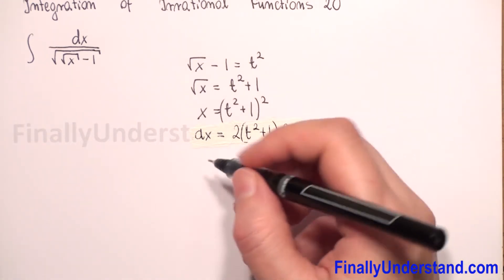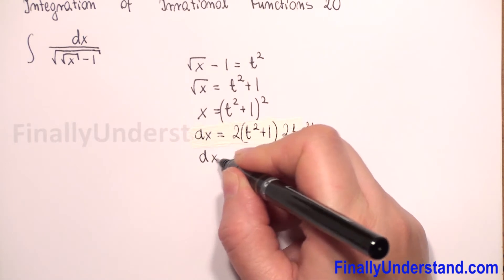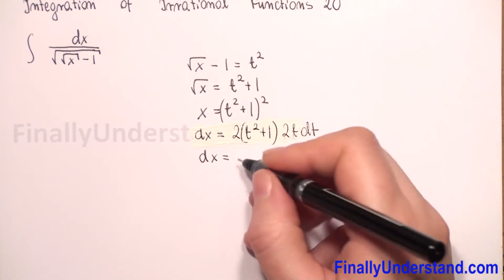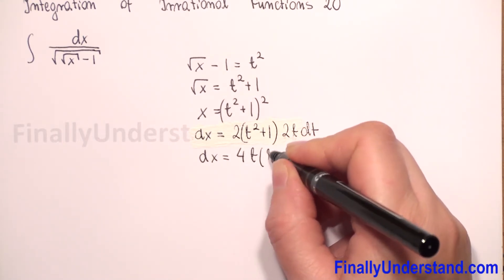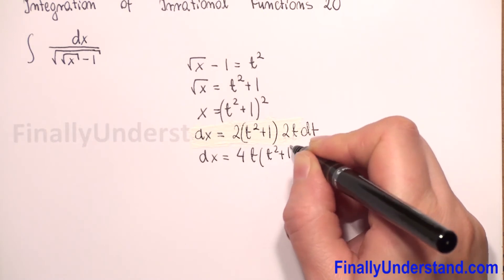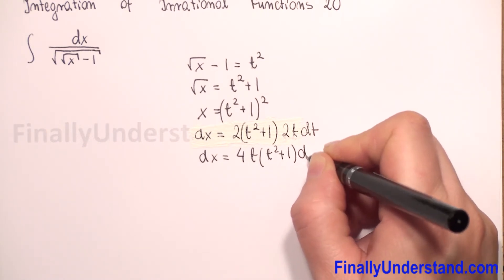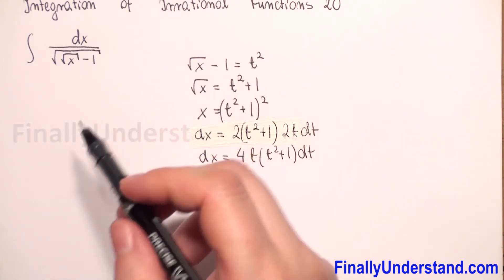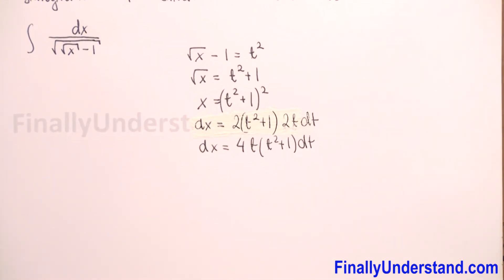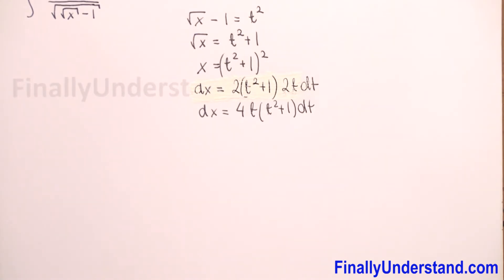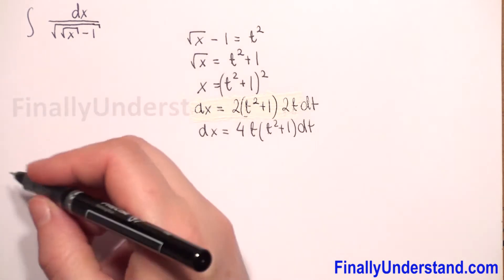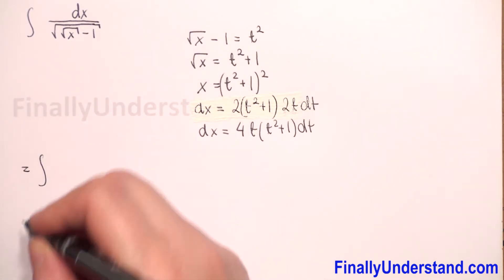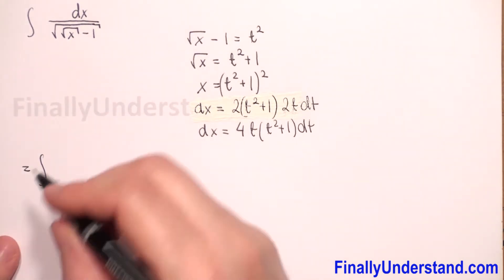So now we can rewrite this: dx is equal to 4t times (t squared plus 1) dt. So we will have the integral of dx which is...